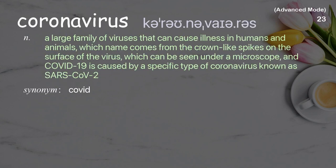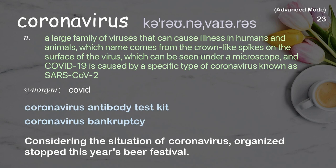Coronavirus: a large family of viruses that can cause illness in humans and animals. The name comes from the crown-like spikes on the surface of the virus, which can be seen under a microscope. COVID-19 is caused by a specific type of coronavirus known as SARS-CoV-2. Examples: coronavirus antibody test kit, coronavirus bankruptcy. Considering the situation of coronavirus, organizers stopped this year's beer festival.